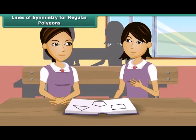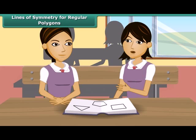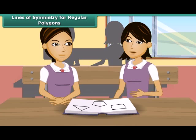Now I will tell you about lines of symmetry in regular polygons. Do you know what a regular polygon is? It is a closed figure made up of several line segments, and a triangle is a polygon made up of at least three line segments. And a regular polygon is one whose all the line segments are equal.